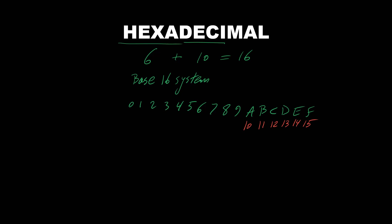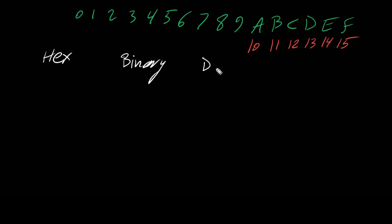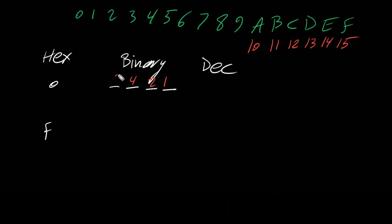For every hexadecimal digit we have four bits. Let's see why. If we look at a table with hex numbers, their binary equivalents, and decimal values — the range is zero to F. With four bits, the place values are 1, 2, 4, and 8. For a hex value of zero, we have four zeros in binary, which is also zero in decimal.